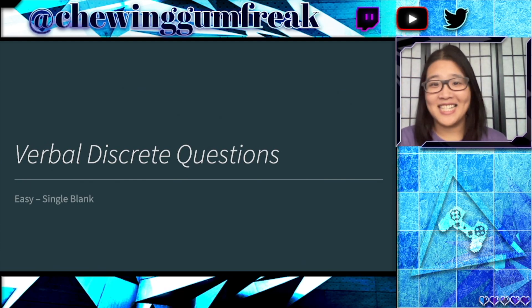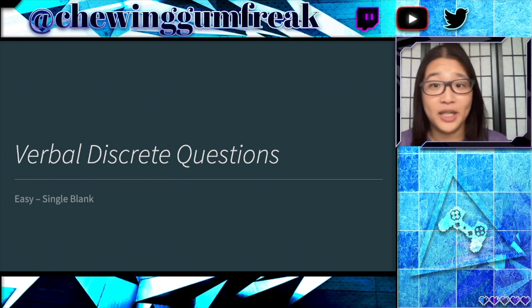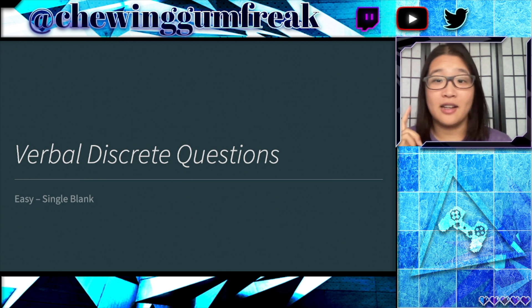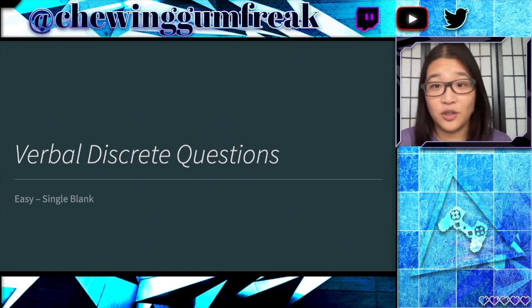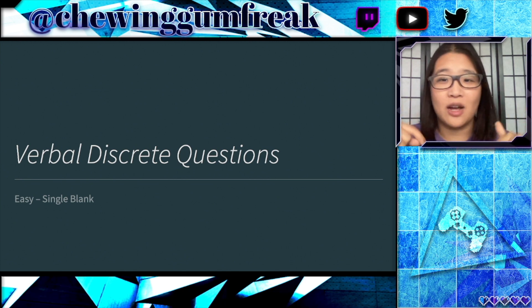Hi everyone, my name is Alice. Today we're going to have another GRE video on the verbal reasoning section. This is the first in a series of videos on the verbal discrete questions, which are the ones that have sentences with different options that you choose to fill in the blank. I'm going to be going over all kinds of tips and tricks as well as easy, medium, and hard difficulty questions anywhere from one to three blanks. So make sure you don't miss the rest of the videos — I'll leave all the info in the description down below.